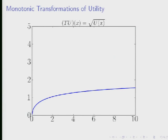So the ordering over all the possible bundles is the same for all of these different uses. These are all examples of monotonic transformations of utility. A definition of a monotonic transformation of utility function is that it doesn't change the preference ordering over the bundles.